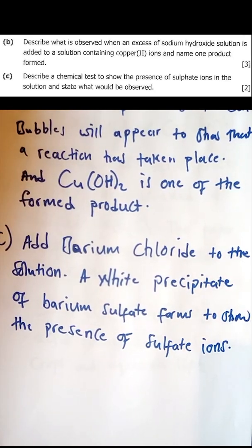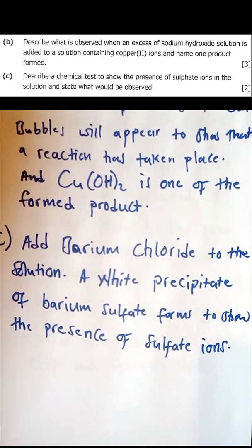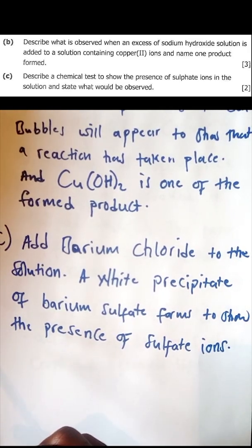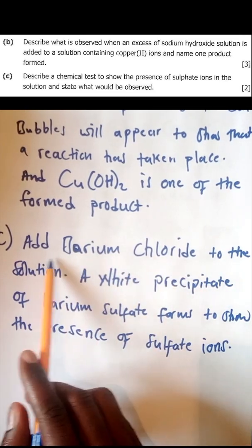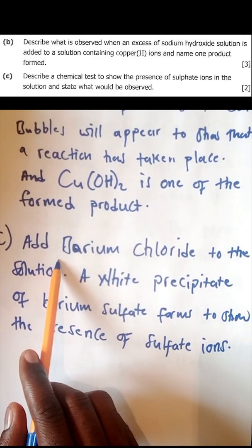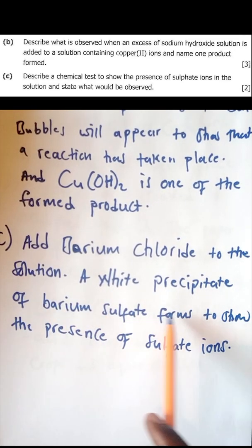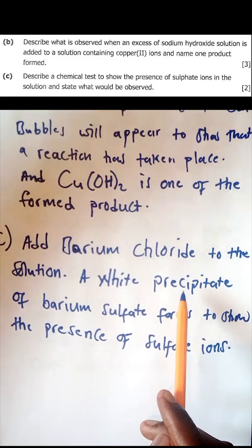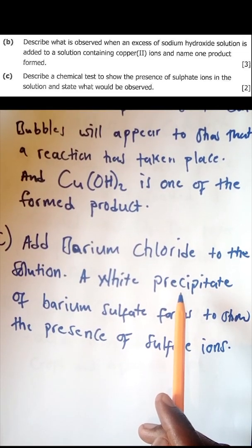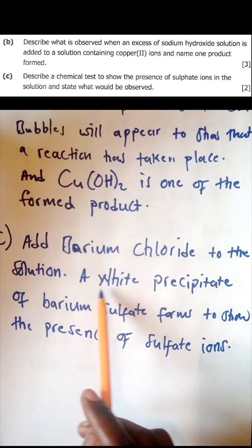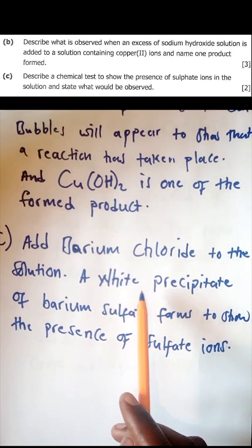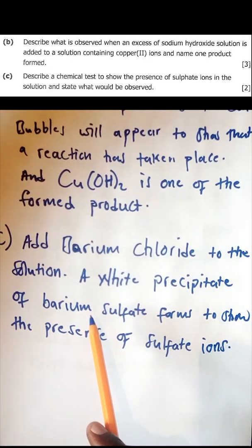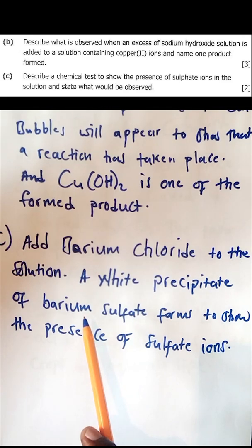Question c: describe a chemical test to show the presence of sulfate ions in the solution and state what will be observed. To test for sulfate ions, add barium chloride. Once you add barium chloride to anything containing sulfate ions, you will see a white precipitate of barium sulfate form. Those white solids — the white precipitate — confirm the presence of sulfate ions in the solution.